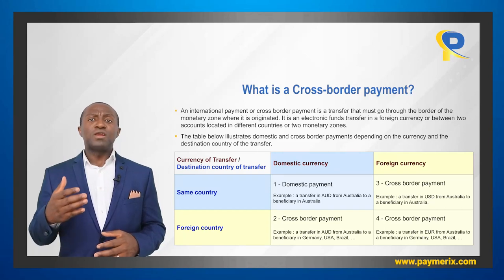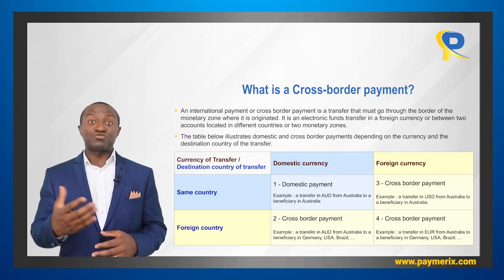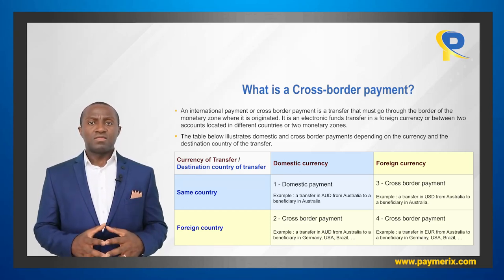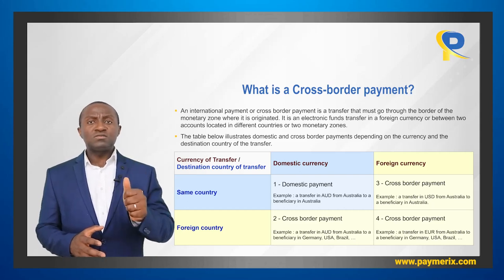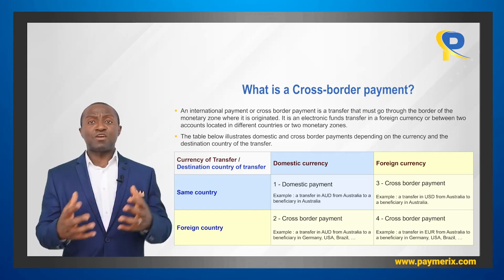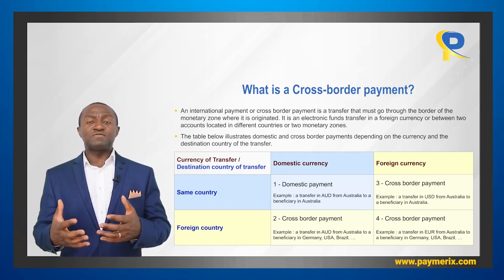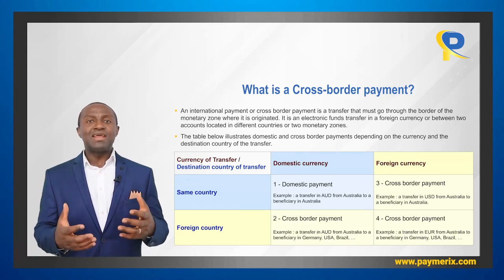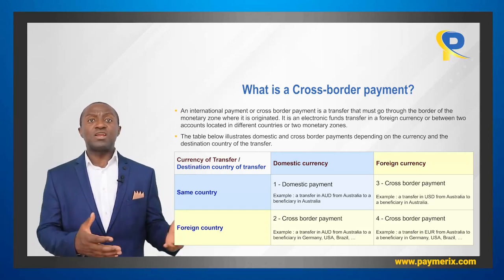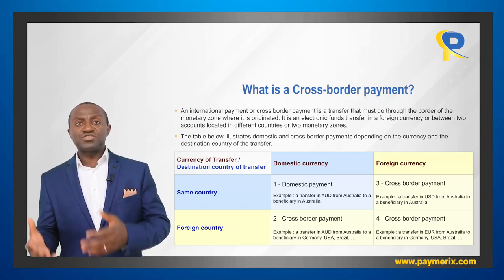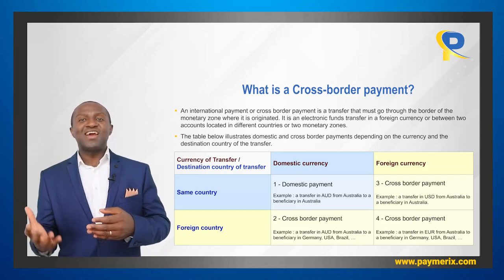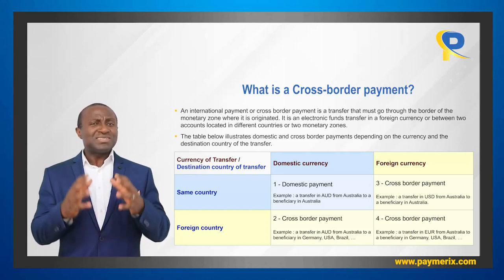We assume that the country where the transfer is originated is Australia, but you can take any other country or monetary zone. There are four quadrants. Quadrant one depicts domestic payments. If the currency of transfer is the national currency and the destination country of transfer is the same country, then it is a domestic payment. An example is a transfer in Australian dollar from Australia to a beneficiary in Australia. Except this first quadrant, everything else is a cross-border payment and we will see why.